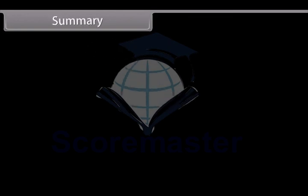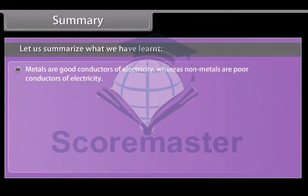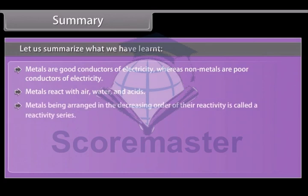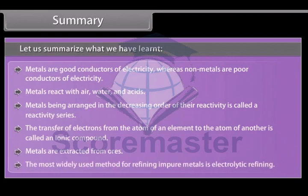Summary. Let us summarize what we have learned. Metals are good conductors of electricity, whereas non-metals are poor conductors of electricity. Metals react with air, water and acids. Metals being arranged in the decreasing order of their reactivity is called a reactivity series. The transfer of electron from the atom of an element to the atom of another is called an ionic compound. Metals are extracted from ores. The most widely used method for refining impure metals is called electrolytic refining.